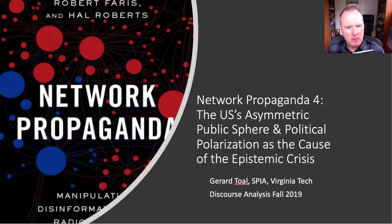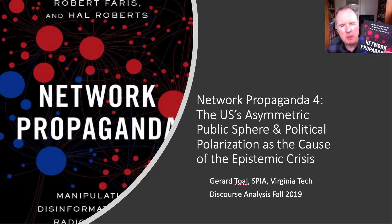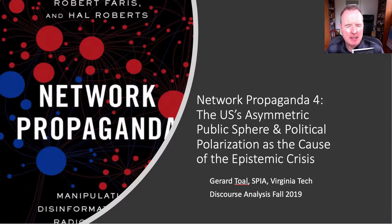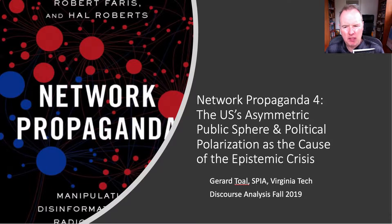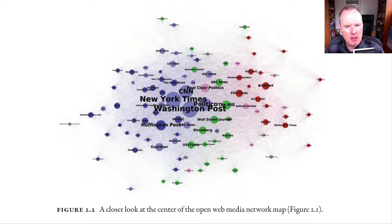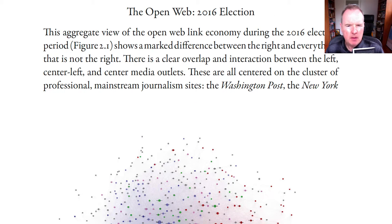Hello and welcome. My name is Dr. Gerard Toll and this is the fourth and final lecture on this book, Network Propaganda. In this lecture, I want to summarise the key argument in the book about the asymmetric public sphere in the United States and the political polarisation associated with it as the cause of the epistemic crisis. Let's begin with this particular map, which is a map of what they call the open web.